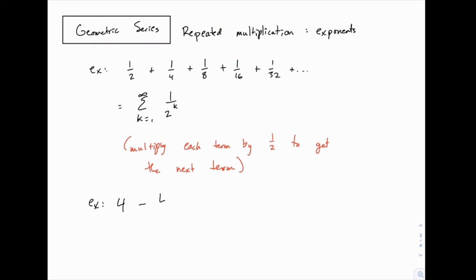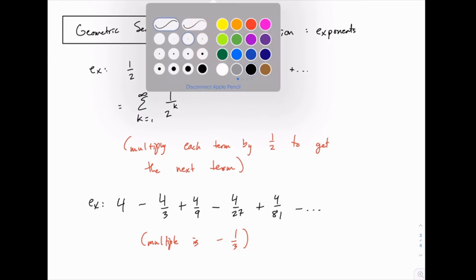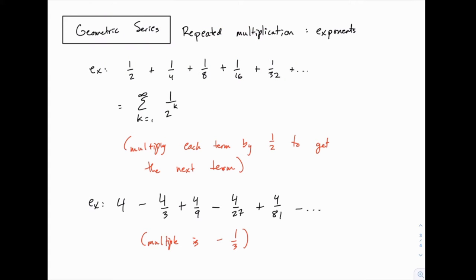Another example: four minus four thirds plus four ninths minus four over 27 plus four over 81, and so on. Think about what happens each time. We have four; if we multiply that by negative one third, that gives us negative four thirds. Multiply that by negative one third, we get four over nine, then four over 27, and so on. So here the common multiple is negative one third. All you need is the first two terms to find that common multiple — the second term divided by the first term is the common multiple — and then you can verify using the following terms.